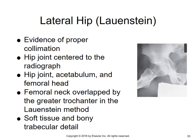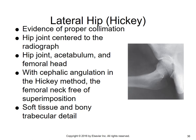For the Lowenstein method: proper collimation with the hip joint centered on the radiograph; the hip joint, acetabulum, and femoral neck should be seen. Note that the femoral neck is overlapped by the greater trochanter in the Lowenstein method. For the Hickey method, the positioning is the same but the 20-degree cephalic angulation frees the femoral neck from superimposition by the trochanter — so the hip joint, acetabulum, and femoral head should be seen with the neck clear. Soft tissue and bony trabecular detail should be visible in both methods.